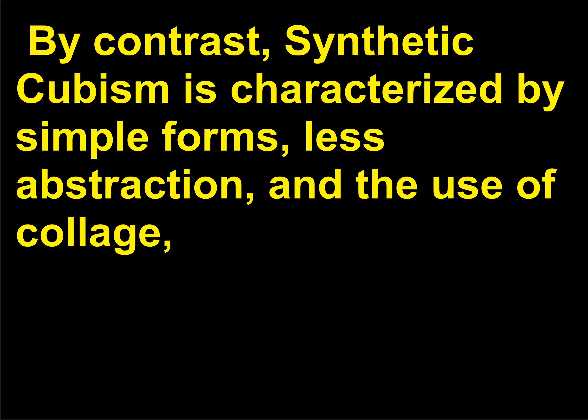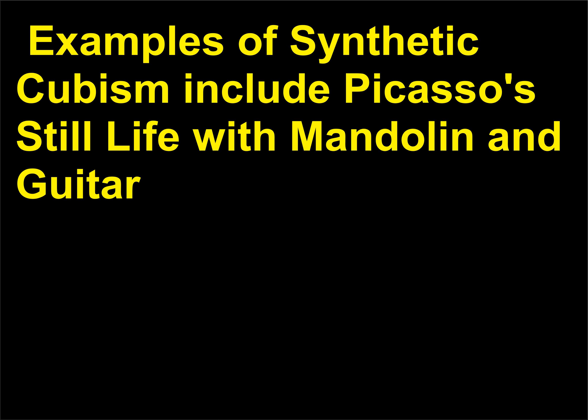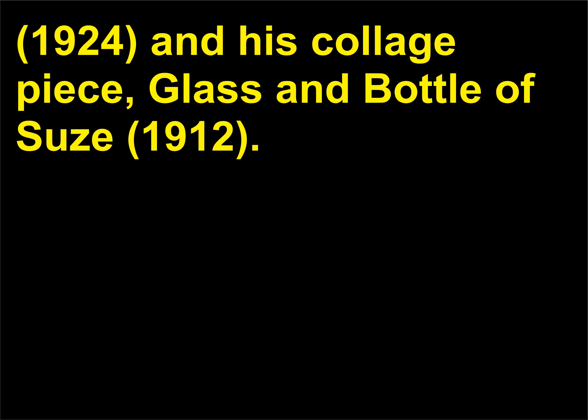By contrast, Synthetic Cubism is characterized by simple forms, less abstraction, and the use of collage — a process in which the artist applies elements such as newspaper to the canvas with glue. Examples of Synthetic Cubism include Picasso's Still Life with Mandolin and Guitar (1924) and his collage piece Glass and Bottle of Suze (1912).